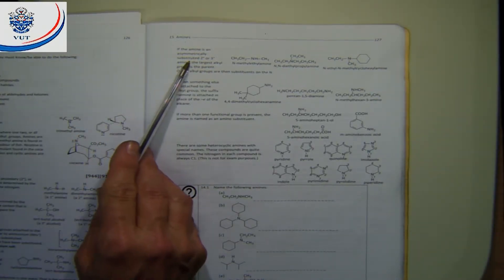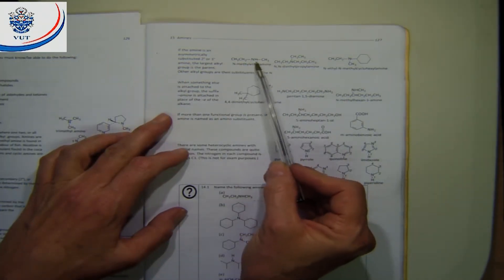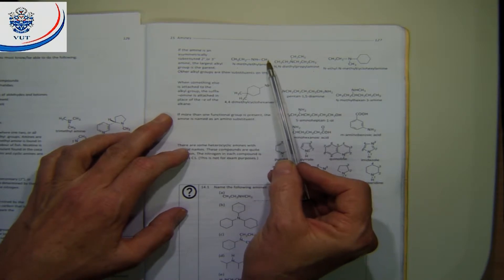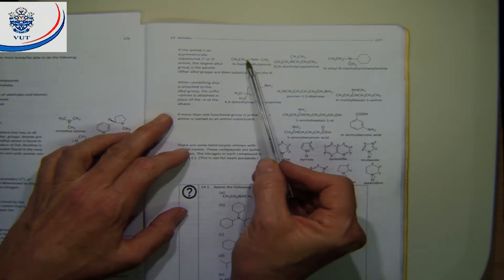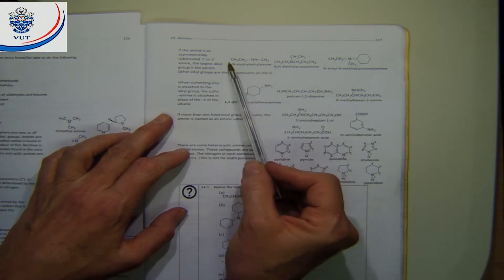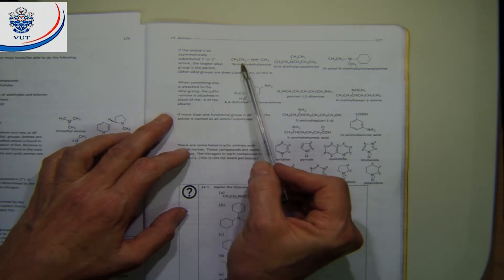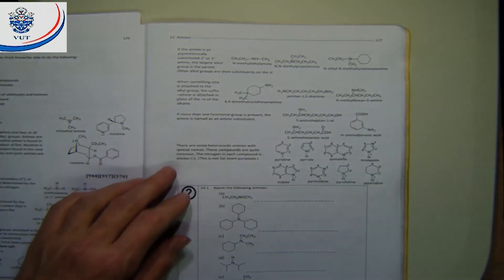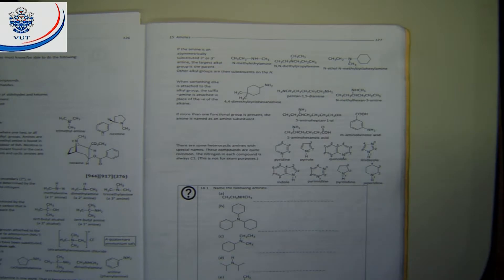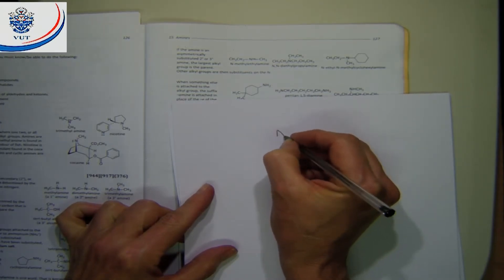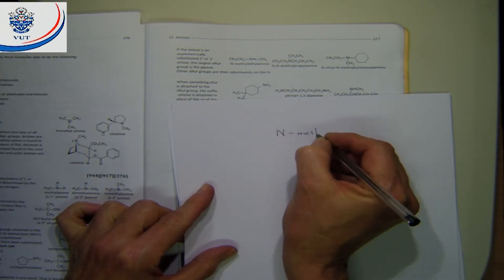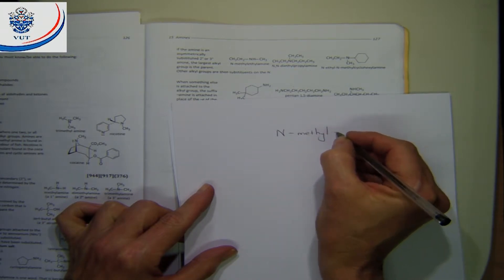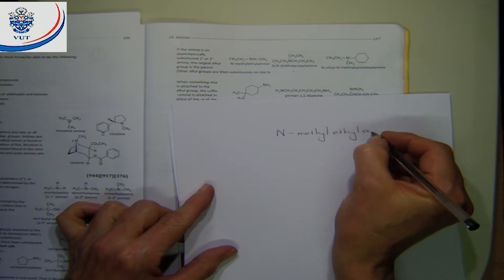If we have an amine which is asymmetrically substituted — meaning you don't have the same type of group on each side — for example a methyl group here and an ethyl group there — that's not the same thing. When that happens, the longer chain will be chosen as our parent. So here we choose ethane as our parent, and you name that one as N-methylethylamine.